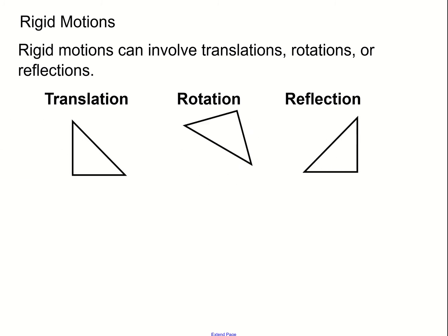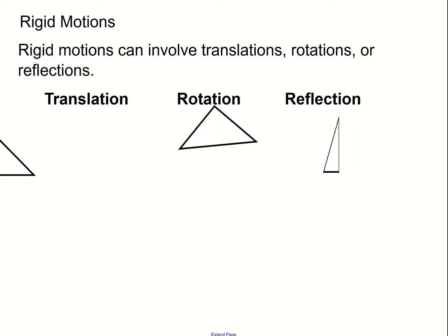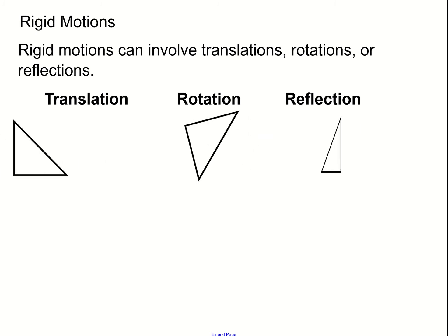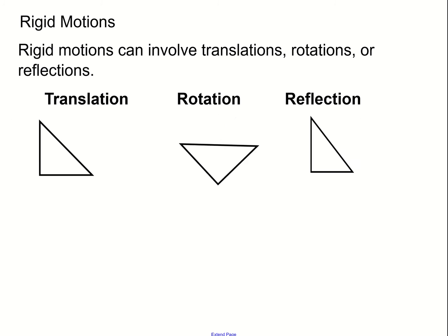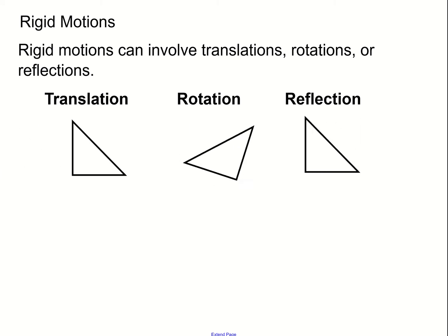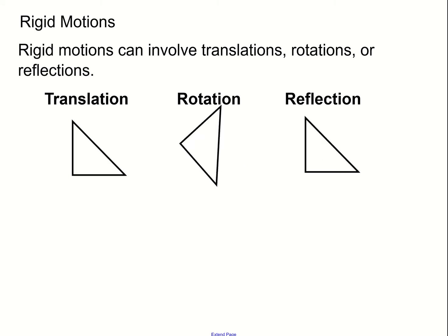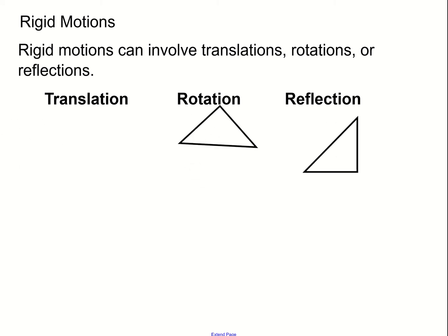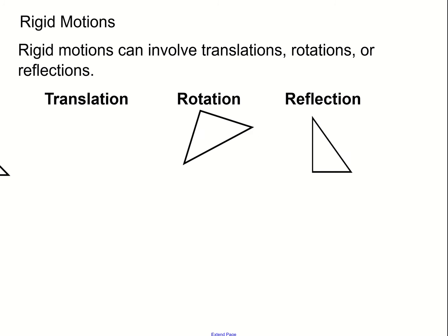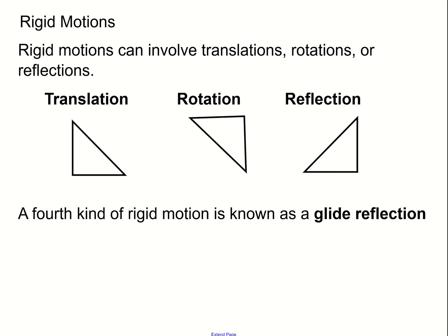For rotation, you're changing the orientation in space and rotating it counter-clockwise or clockwise. For reflection, you can think of it as flipping a figure about a given line, or reflecting about a given line.